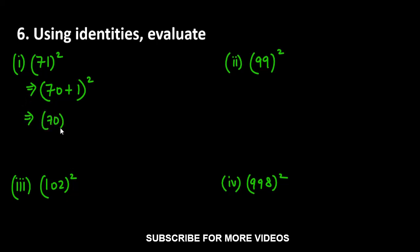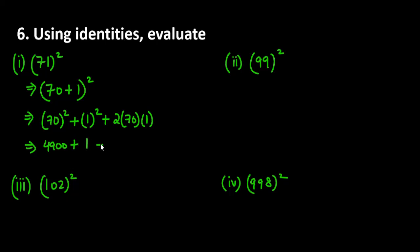First term is 70 square, second term is 1 square. Then in the last we have 2 into 70 into 1. 70 square is 4900, 1 square is 1, 2 into 70 is 140. Let's add this and you will get the final answer 5041.